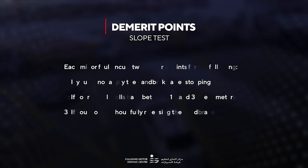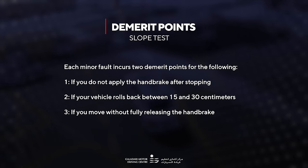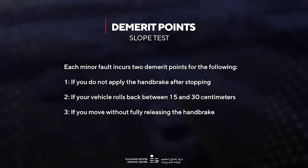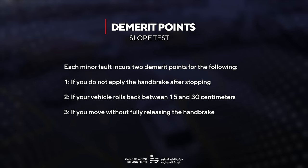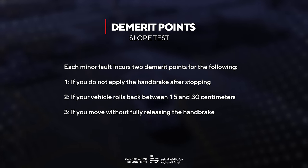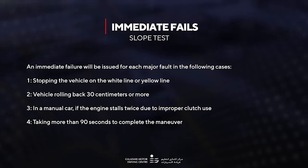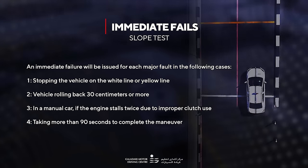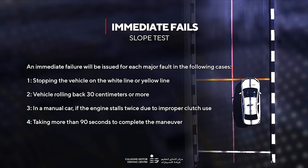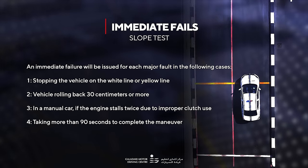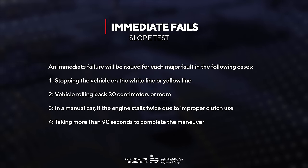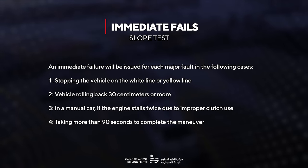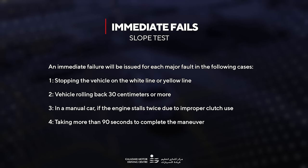Demerit points: each minor fault incurs two demerit points for the following. Number one, if you do not apply the handbrake after stopping. Number two, if your vehicle rolls back between 15 and 30 centimeters. Number three, if you move without fully releasing the handbrake. Immediate fails: an immediate failure will be issued for each major fault in the following cases. Number one, stopping the vehicle on the white line or yellow line. Number two, vehicle rolling back 30 centimeters or more. Number three, in a manual car if the engine stalls twice due to improper clutch use. Number four, taking more than 90 seconds to complete the maneuver.